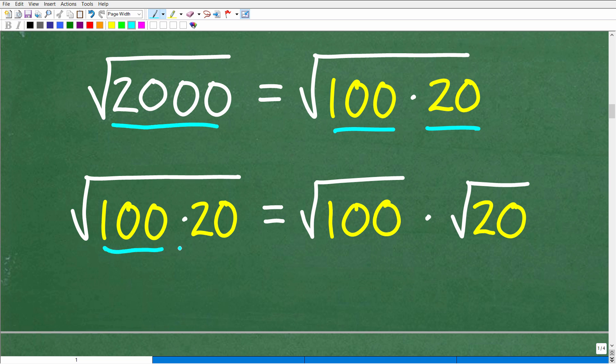So we have the square root of 100 times 20. That's the same thing as the square root of 2,000. So the square root of 100 times 20 here is where we're going to use this property of square roots. We're going to break up each of these factors. We're going to put each of these factors under its own individual square root.